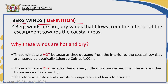So let's define Bergwinds. Bergwinds are hot and dry winds that blow from the interior of the country towards the coastal areas. They blow from the interior of the escarpment — note that, because it is mountainous. They occur in the winter season, descending the dry side of the mountain from the interior towards the coastal areas.